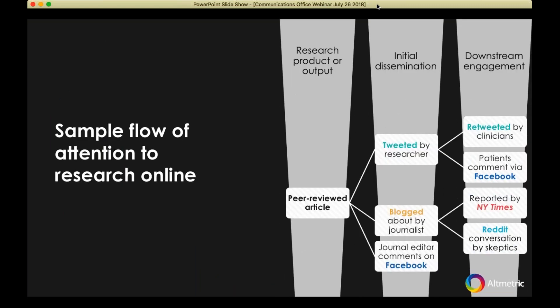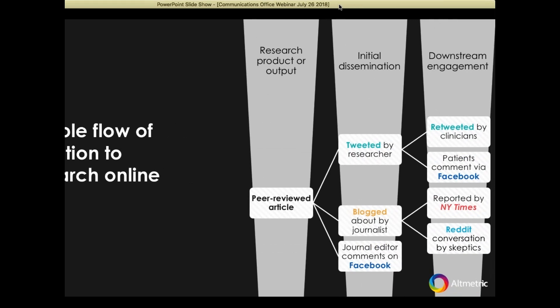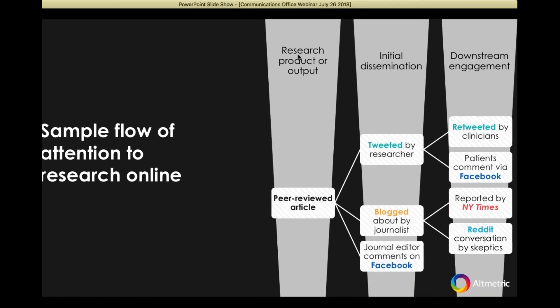This is a sample flow of attention to research online. Something is published, it may be tweeted by a researcher, might be blogged about, and then there is downstream engagement further to that. After the initial dissemination, there might be discussion — patients may comment on it, clinicians, et cetera. Reddit, obviously, when we need negative feedback — and I'm being slightly sarcastic.